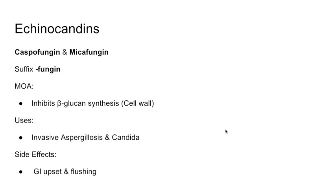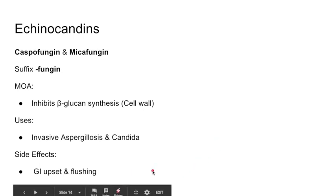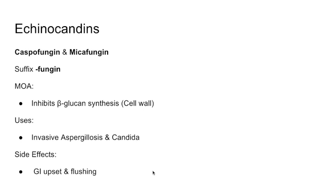Now we're moving on to our echinocandins — caspofungin and micafungin. As discussed, these inhibit beta-glucan synthesis, making them our cell wall inhibitors for fungi. They are a little bit more toxic, with some GI upset and flushing. They tend to only be used for invasive aspergillus and candida — so these are our second-line agents for truly invasive infections. We would tend to use amphotericin first, or maybe an azole. If a patient is unable to tolerate those drugs, then we move to our echinocandins.